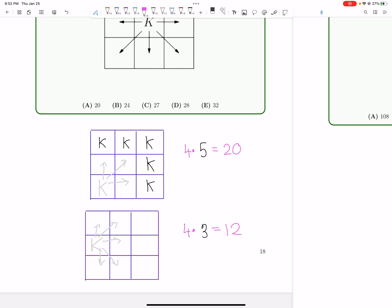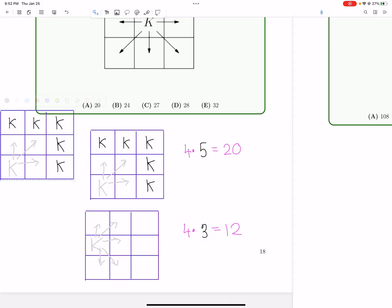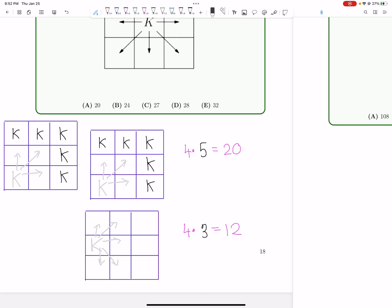Now, what about if the white king is in the center? So you can probably already guess by this point, but if the white king is in the center, there's no place for the black king to go because this white king will now attack every square. So for this case, we have zero choices for the black king. So in total, our answer is just 20 plus 12, 32.